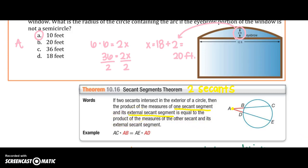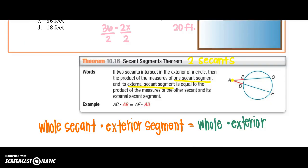So, lots of words there. So, this is how I like to rewrite it. So, the whole secant, so I would say AC is my whole, so I'm going to take that whole length times the exterior segment, which is AB.